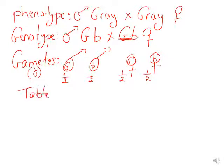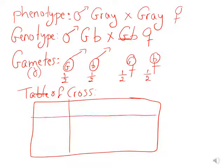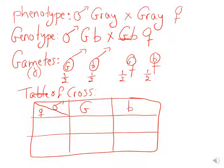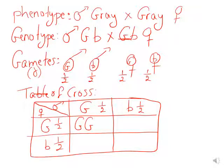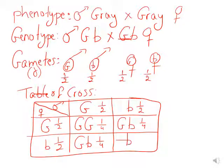Table of cross: draw using pencil and ruler. Male and female each have gametes G (1/2) and b (1/2). Filling in: G × G = GG at 1/2 × 1/2 = 1/4; G × b = Gb at 1/4; b × G = Gb at 1/4; b × b = bb at 1/4.